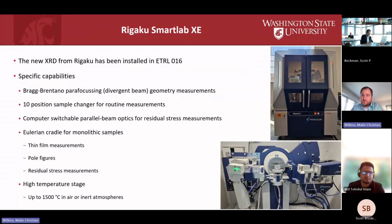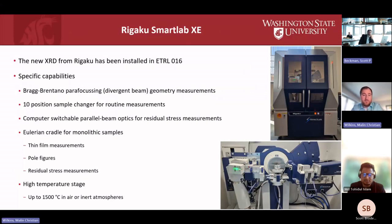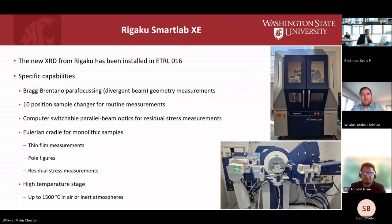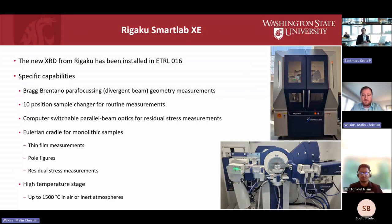The features specific to this diffractometer — the reason we bought it — are two separate families of measurements. We have parallel beam optics, which can be switched by computer without needing to physically reconfigure the enclosure. This is good for texture measurements from pole figures and residual stress measurements. We also have a high-temperature stage, essentially a transparent enclosure that goes up to 1500°C in air, inert, or vacuum atmospheres.